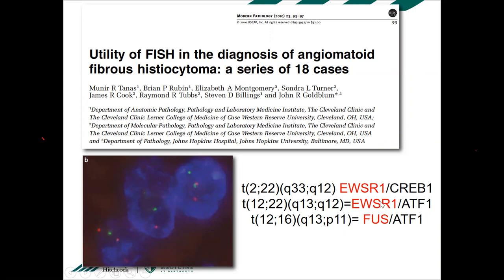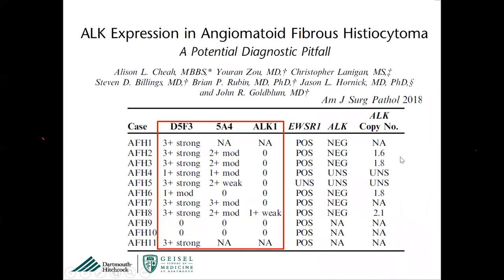Less commonly, FUS rearrangements are seen — FUS and EWSR1 are interchangeable in many tumors. If you don't have NGS and only have FISH break-apart probes, you can start with EWSR1; if negative but you're still suspicious of AFH, move to FUS FISH as a second step.